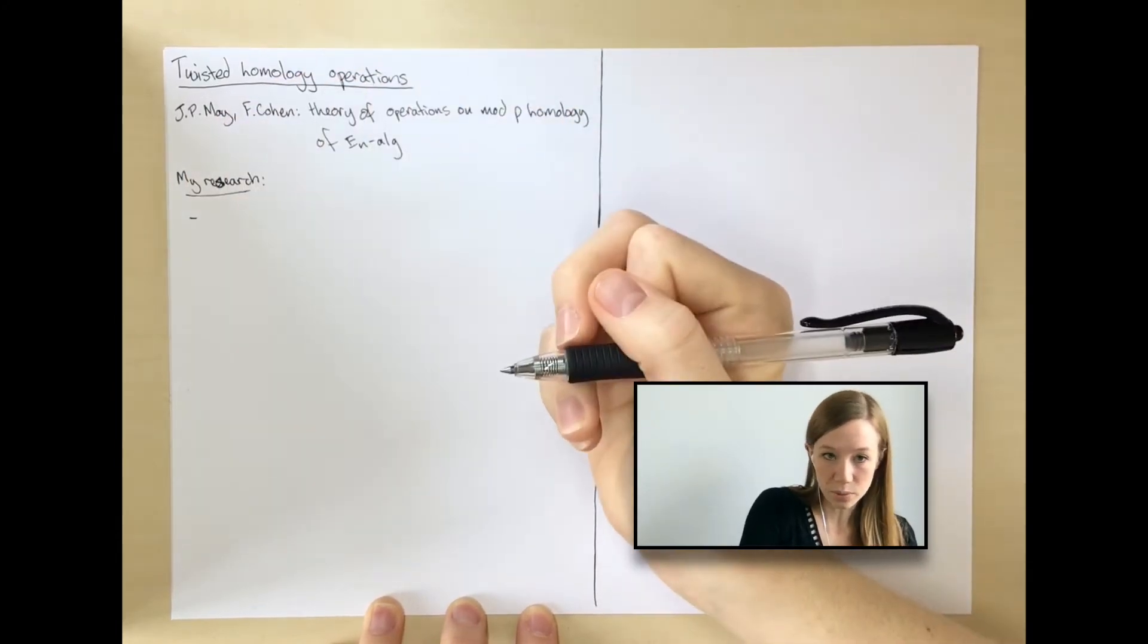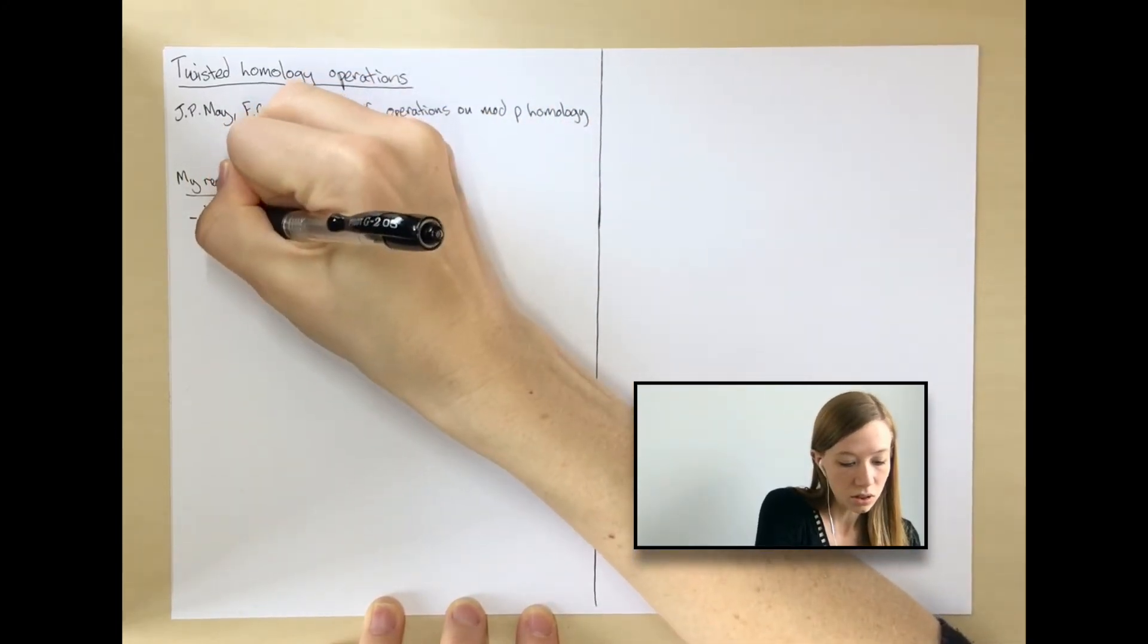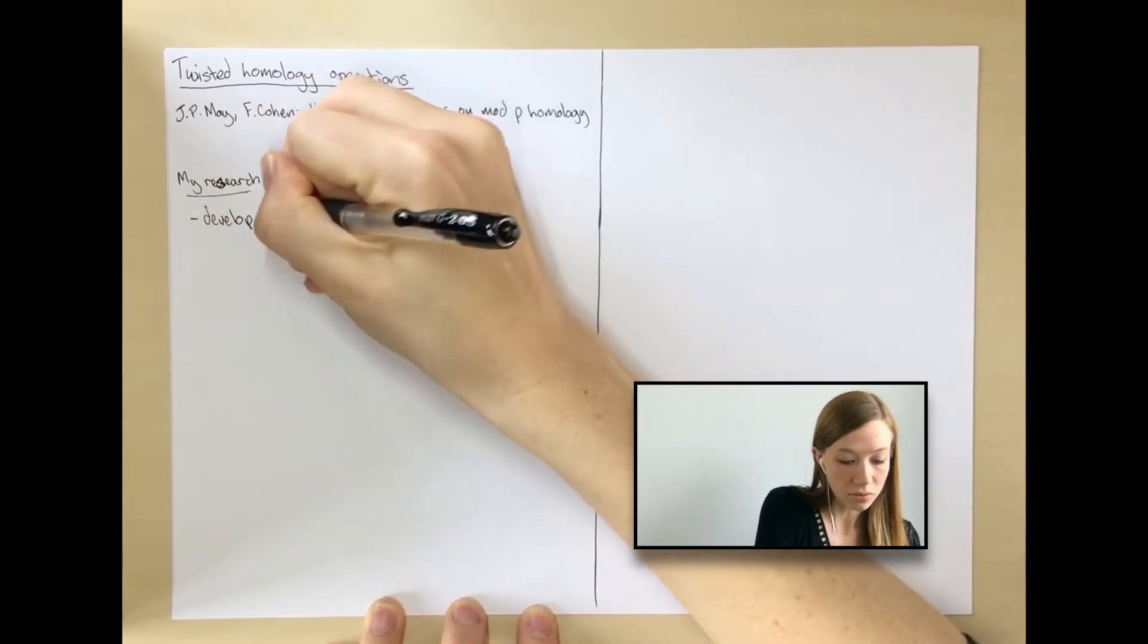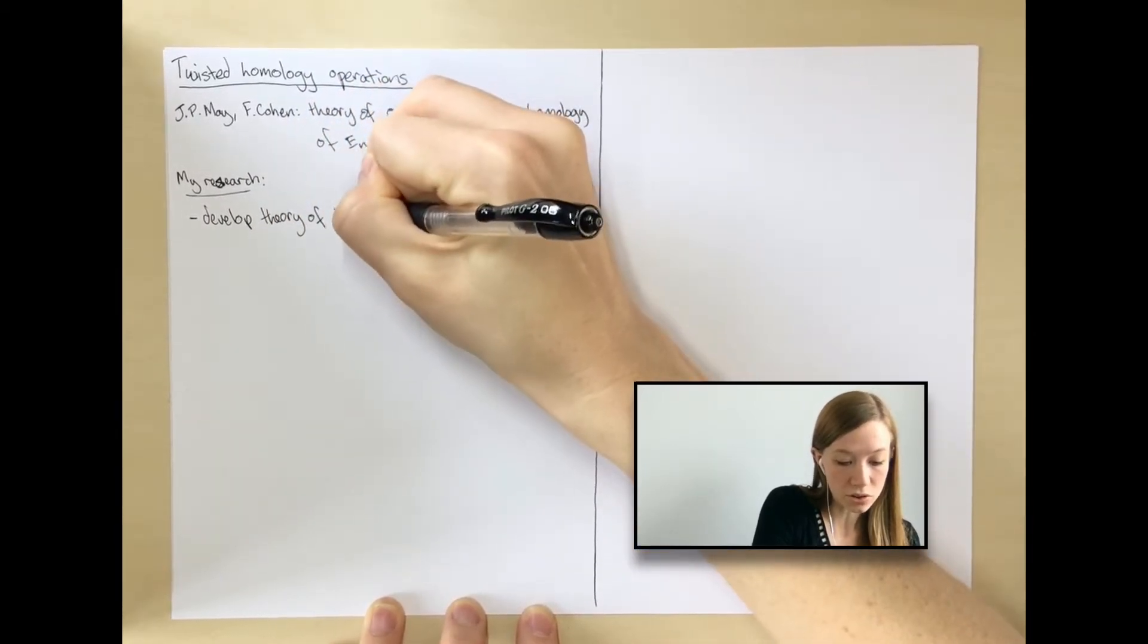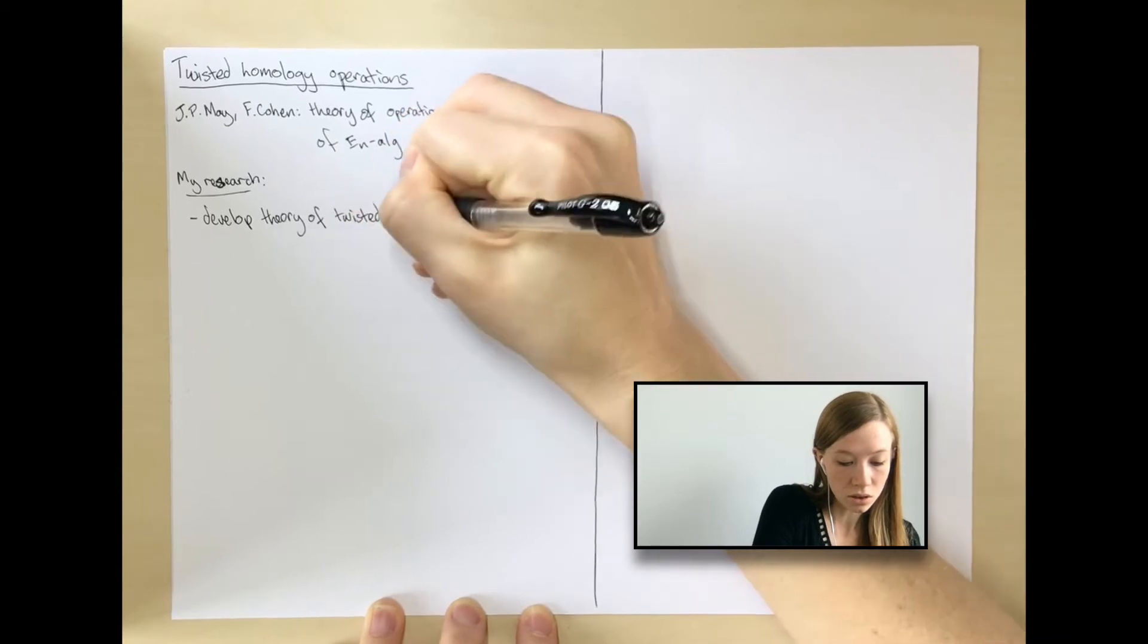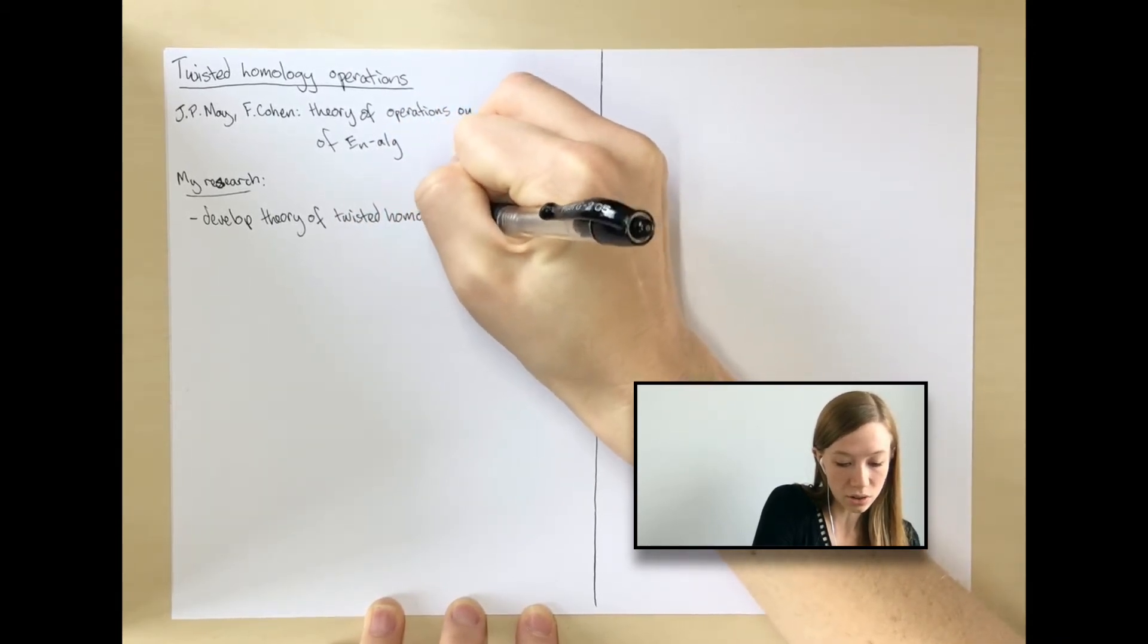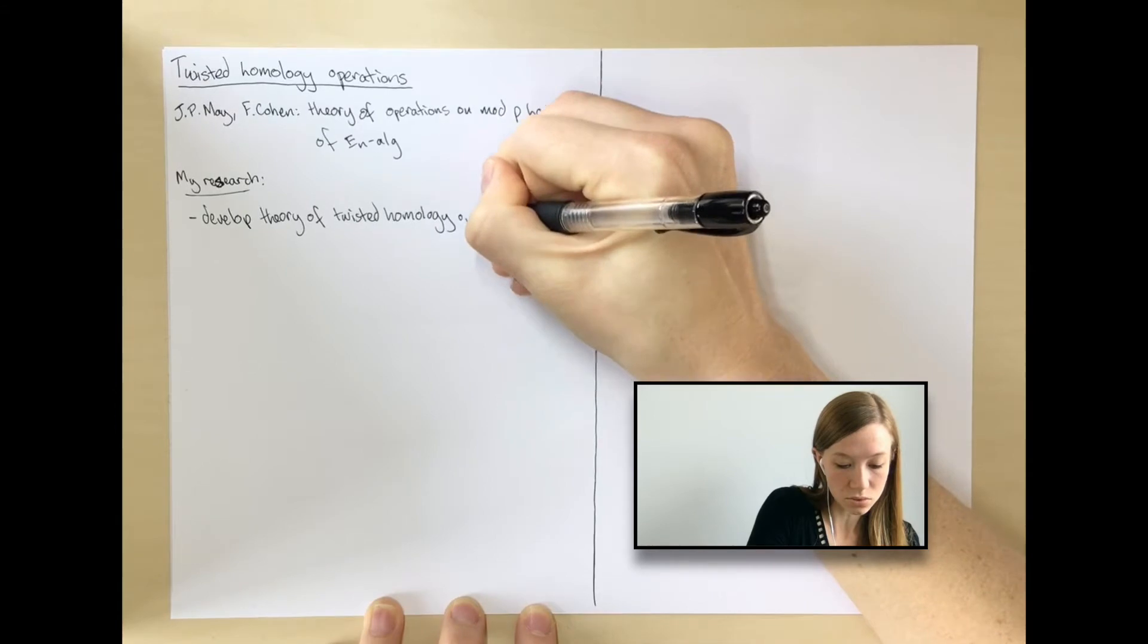So that's the first thing I've been working on: developing a similar theory of twisted homology operations on homology of E_n algebras with certain twisted coefficient systems.